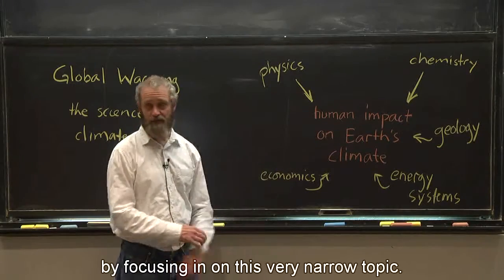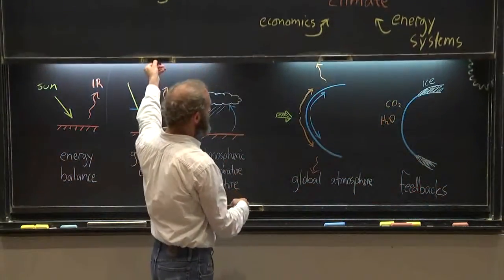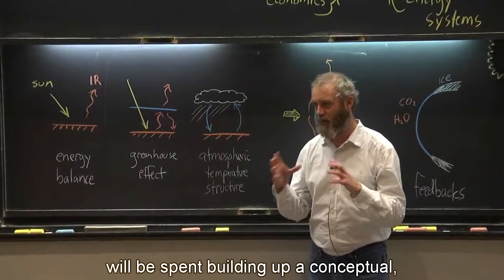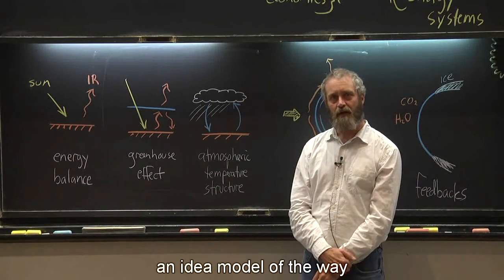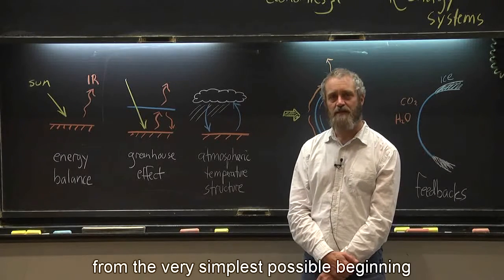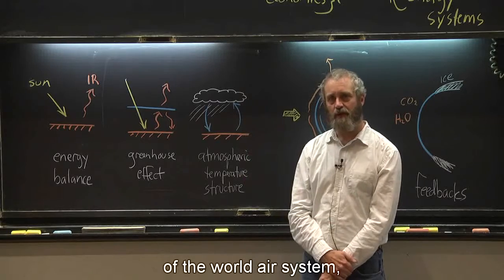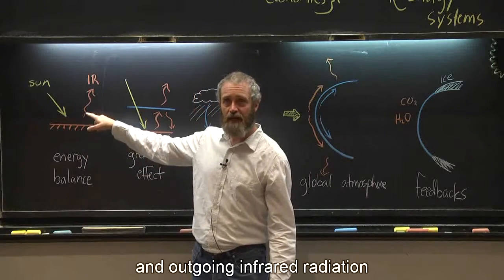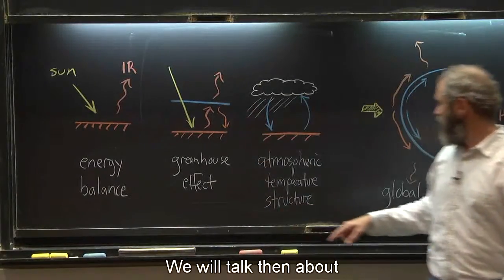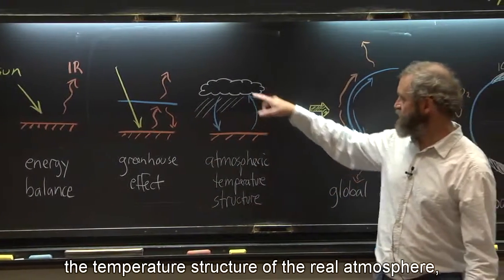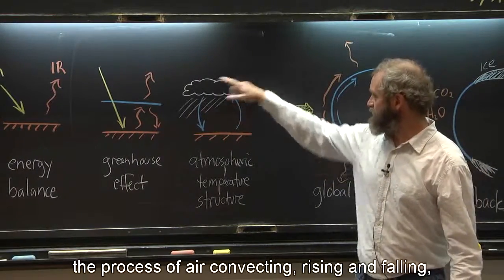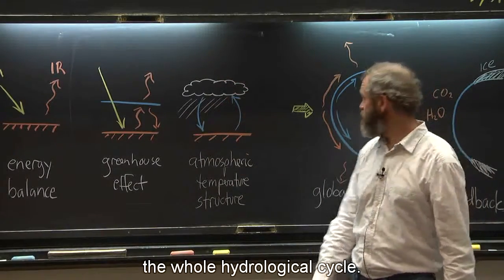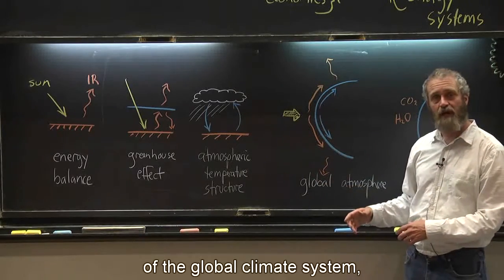Focusing on this fairly narrow topic, the first half of the class will be spent building up a conceptual idea model of the way the climate of the Earth works — from the very simplest possible beginning up to the full complexity of the real Earth system. It'll start with simple energy balance, with energy fluxes being sunlight and outgoing infrared radiation, then we'll add a greenhouse effect, then the temperature structure of the real atmosphere, determined by air convecting, rising and falling, condensing water vapor, and the whole hydrological cycle.